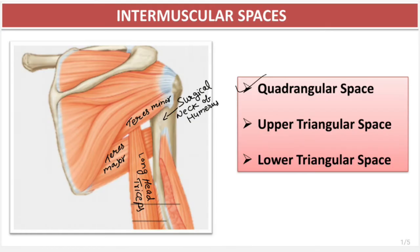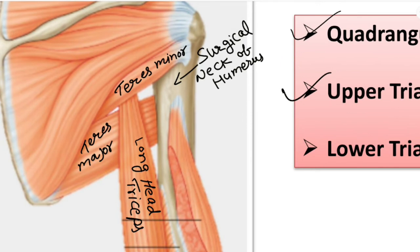The next space is the upper triangular space. What are its boundaries? Superiorly it is bounded by the inferior border of the teres minor. Laterally by the medial border of the long head of the triceps. And inferiorly by the superior border of the teres major muscle. This triangular-shaped space is the upper triangular space.